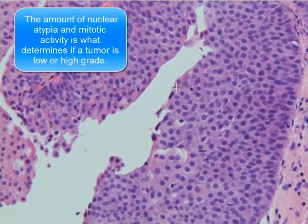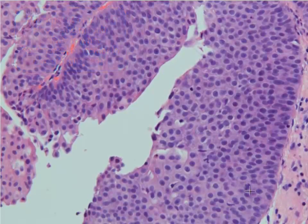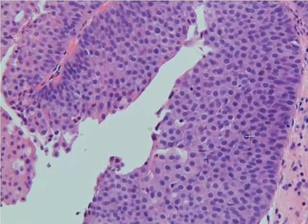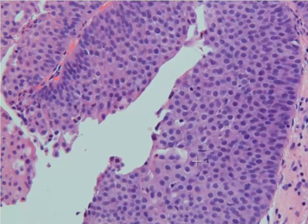You still have these umbrella cells sitting up on top. And here's one mitotic figure in this field. Occasionally you'll see mitotic figures and a little bit of nuclear atypia — meaning that one nucleus is bigger than the one next to it — but these changes are considered mild.